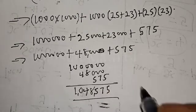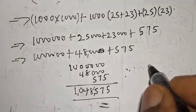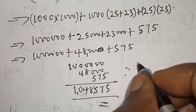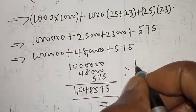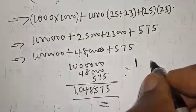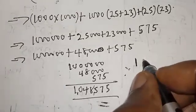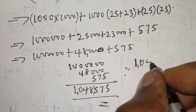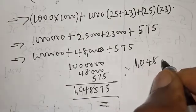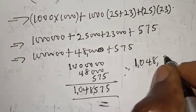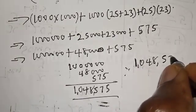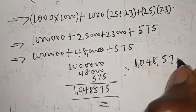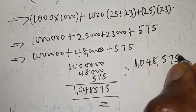If you add everything together we have 1,000,000 plus 48,000 plus 575, which gives us 1,048,575. Therefore our final answer is one million and forty-eight thousand five hundred and seventy-five.